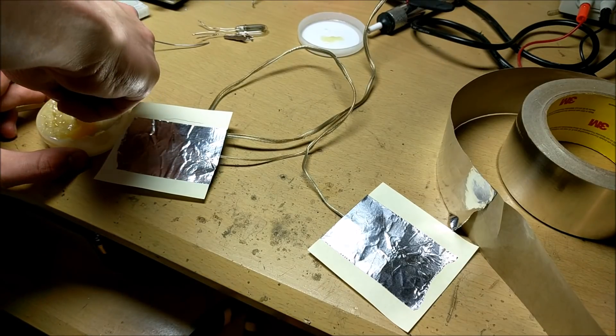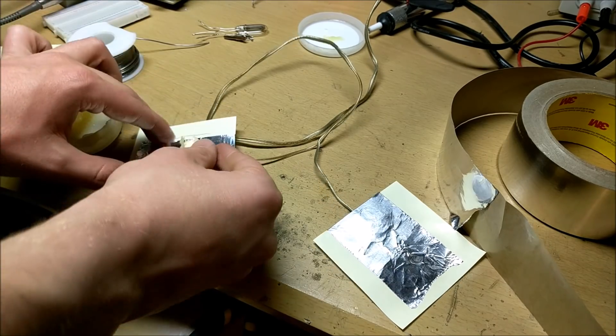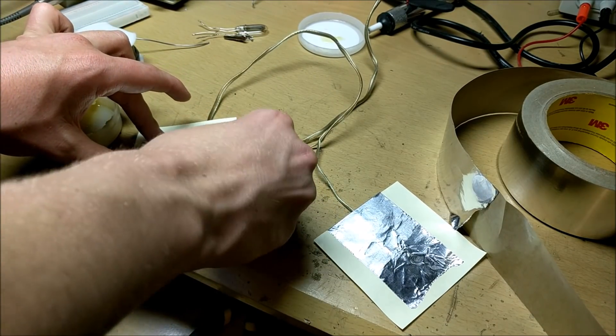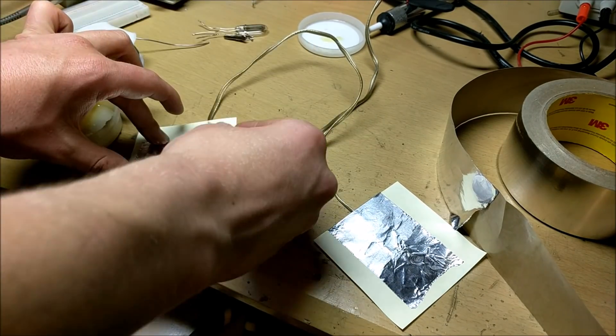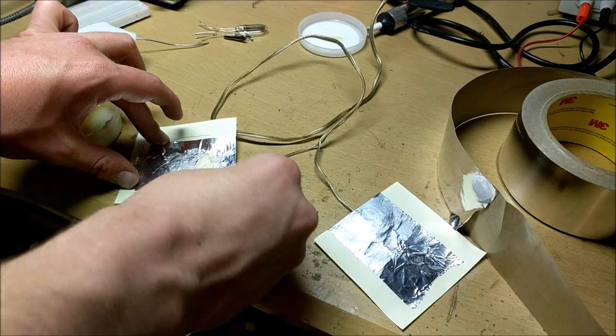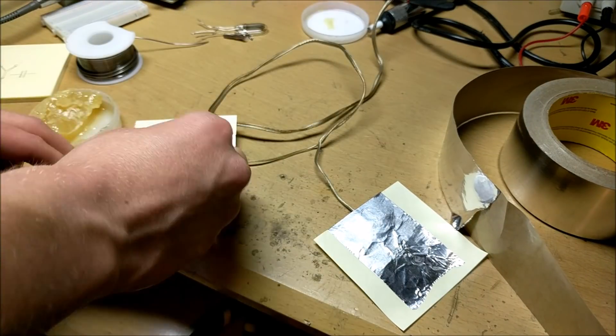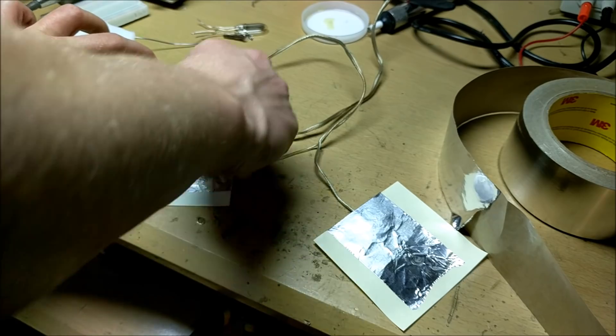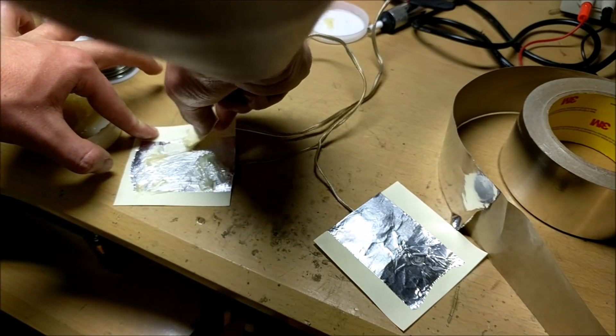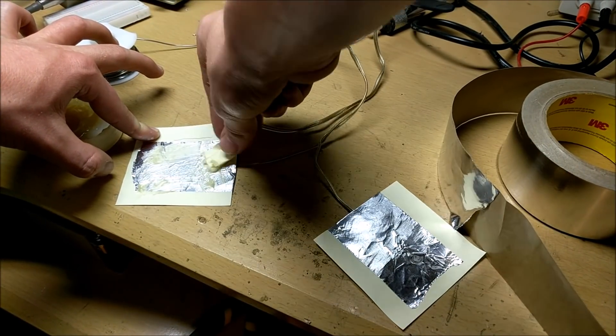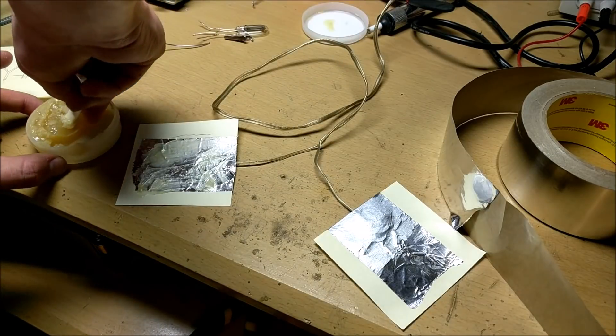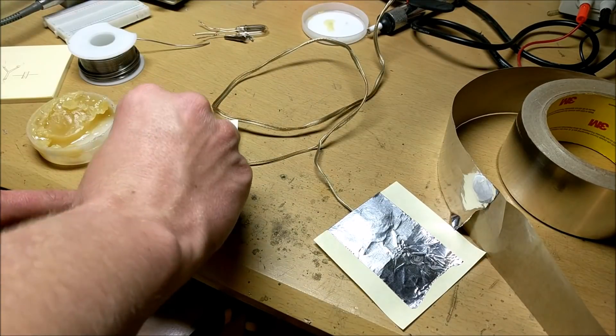I will use a folded up sticky note dipped in this flux to apply the flux evenly to the surface, and it needs to be relatively thick. This is the soldering flux. And normally what this flux is used for is it's used for placing on surfaces that are to be soldered, so that way the solder will easily bind to the surface.